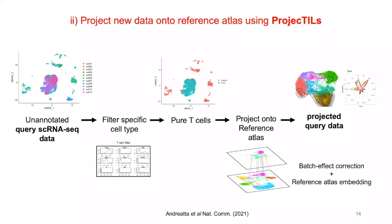Now that we have a reliable atlas, we can start using it to interpret new data. And this is done by our algorithm Projectiles. In the first step, the method will filter the relevant cell type — in this case CD8s — and then it will correct for batch effects and embed the query transcriptomes into the high-dimensional space of the reference atlas. For visualization, Projectiles uses contour lines indicating the areas of the map with high density of projected cells. So let's see a real-life example.